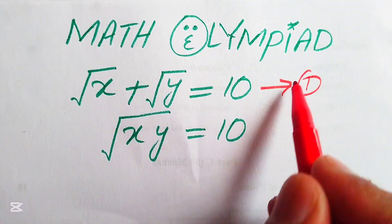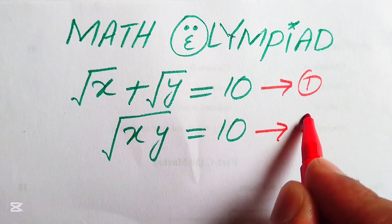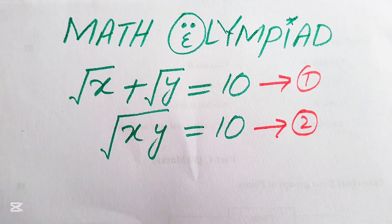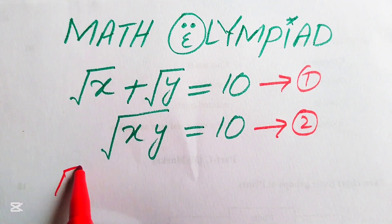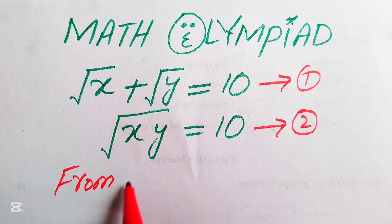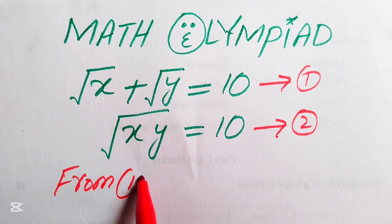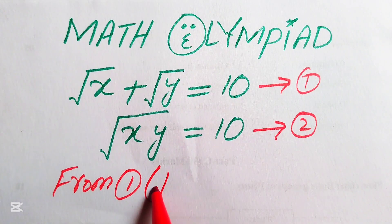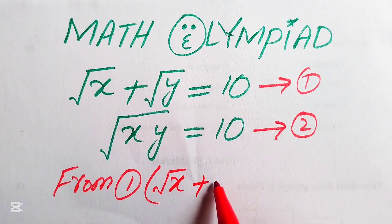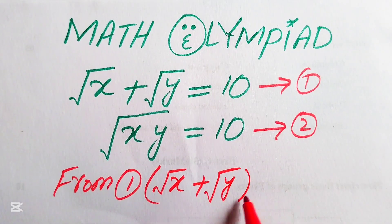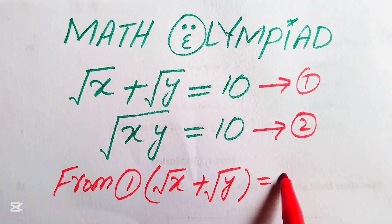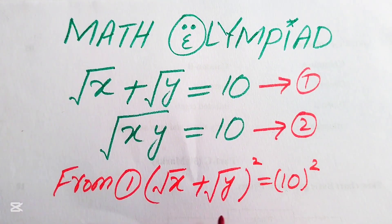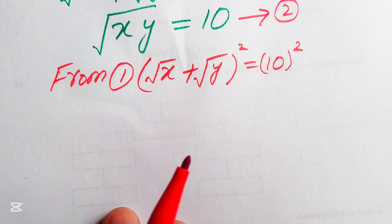We call the first equation number 1 and the second equation number 2. Now we focus on equation number 1. We will take squaring on both sides of equation number 1, which gives us the square root of x plus the square root of y, all squared, equals 10 squared.